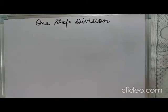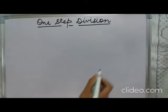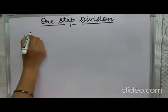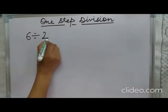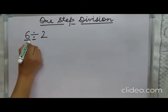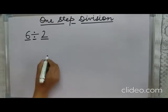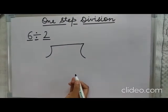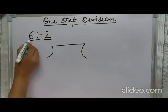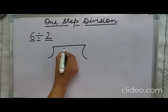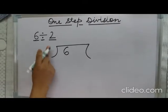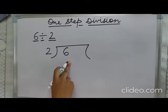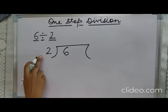In one-step division we complete the division in just one step. Let us take the example: 6 divided by 2. This is the division sign. Here 6 is the dividend and 2 is the divisor. When we start doing the sum, we draw a division bracket symbol — the dividend is placed inside and the divisor is written outside. This is the first step we do while setting up a division sum.